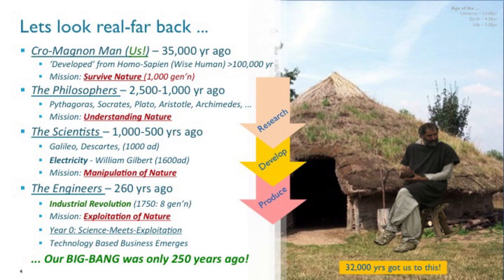The philosophers — Pythagoras, Socrates, Plato — we know their names; they were between 1,000 and 2,500 years ago. These are the guys who had enough food and enough warmth and were starting to look around because they were a bit bored. They started banging things together and asking questions about what the difference between water and solid things is. They started this mission, if you like, to understand aspects of nature.